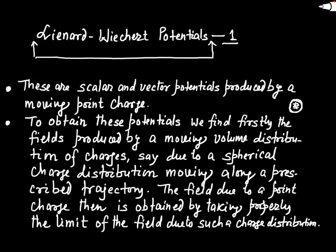The Liénard-Wiechert potential is a scalar or vector potential — the same as what you have studied before — but the charge producing it is a point charge and is also in motion. So if a potential is produced by a point charge that is in motion, then the scalar or vector potential produced by it is called the Liénard-Wiechert potential. Simply stated, these are the scalar and vector potentials produced by a moving point charge.